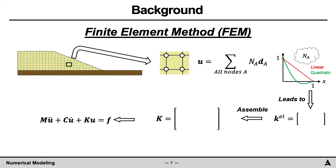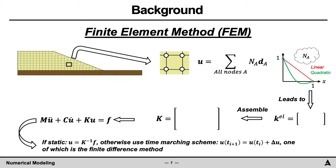In the case of a static problem, the nodal accelerations and velocities are zero, and the unknown nodal displacements are calculated by inverting the stiffness matrix and multiplying this inverted matrix by the known nodal forces. If the acceleration and velocity are not zero and the solution is to be determined with respect to time, a time marching scheme is used where the displacement at one time is approximated by the sum of the previous displacement plus the increment in displacement for that time step. An example time marching scheme that may be employed is the finite difference method.